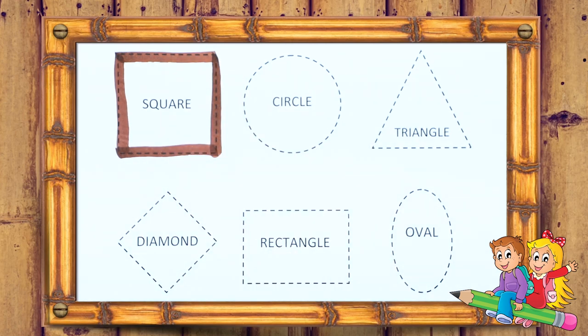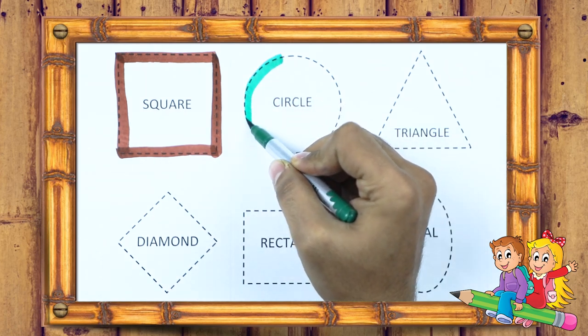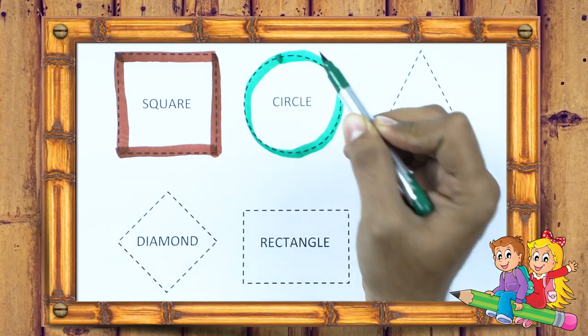It's a circle. Circle with green color. Round, circle.